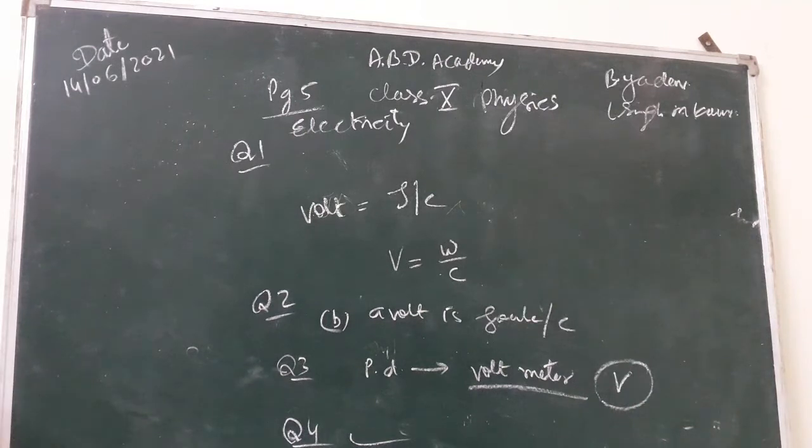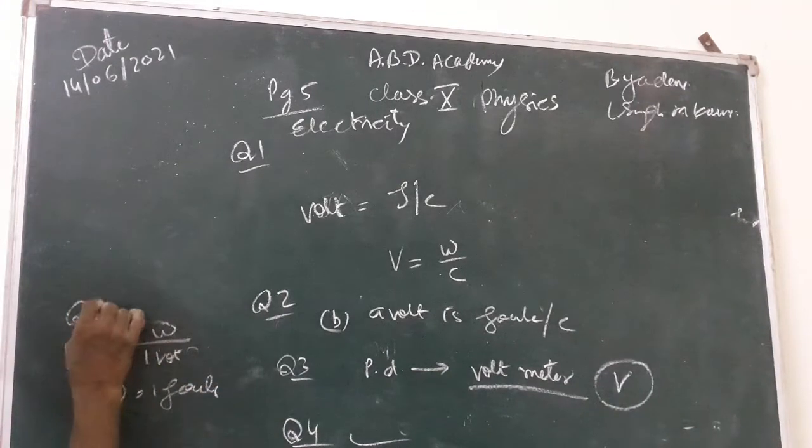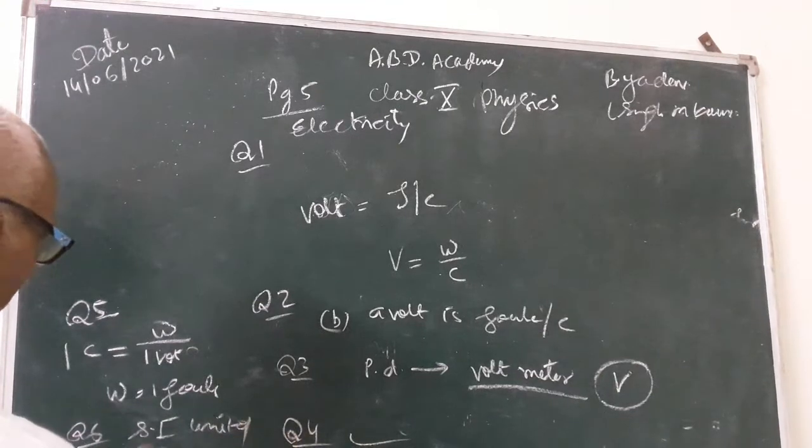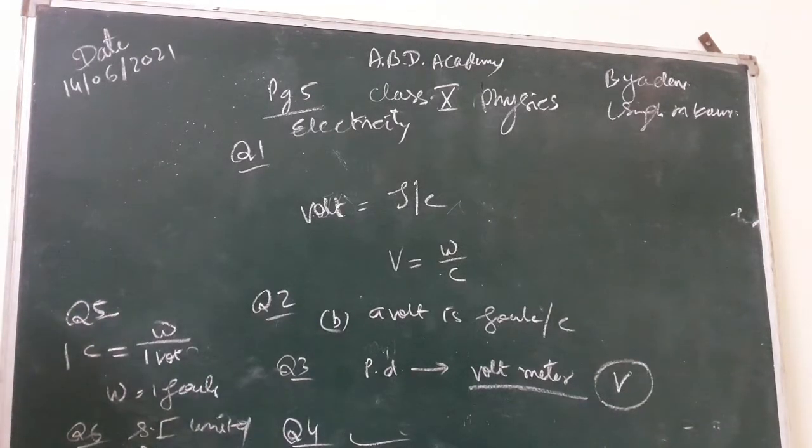Question 5 is how much work is done when one coulomb charge moves against a potential of one volt. One coulomb charge is moved with one volt and work done is one joule.